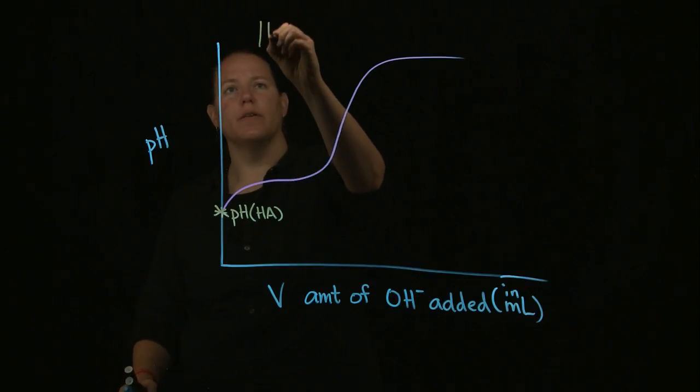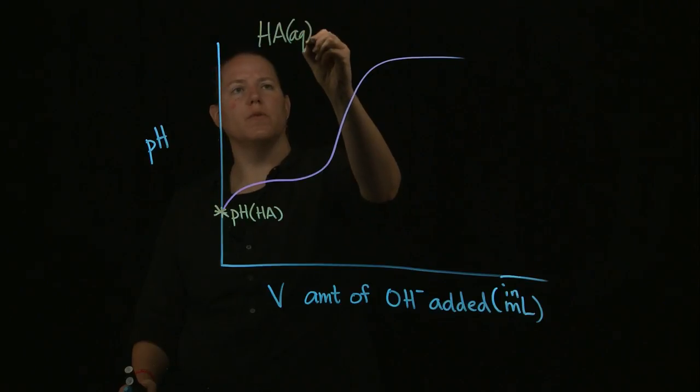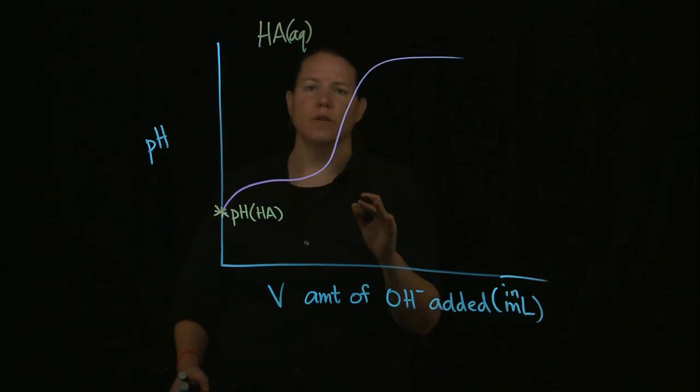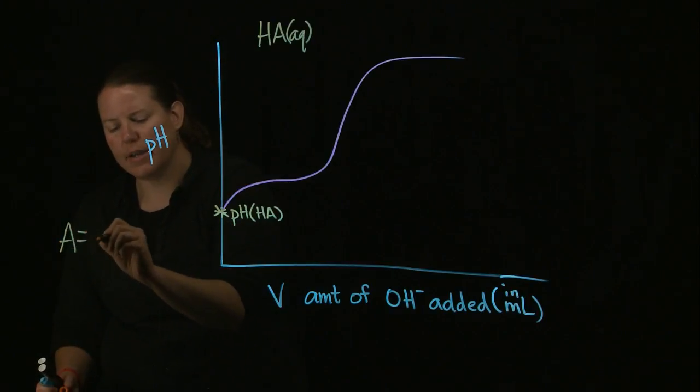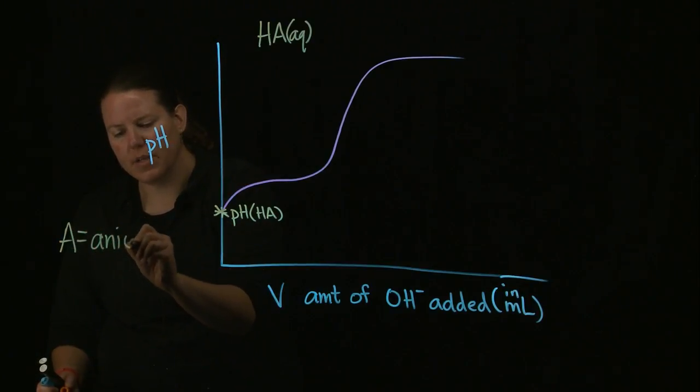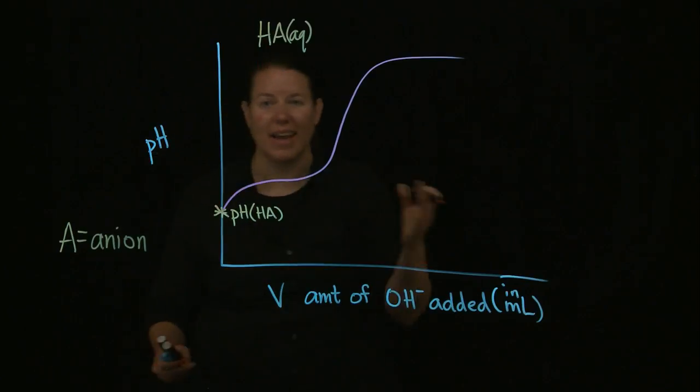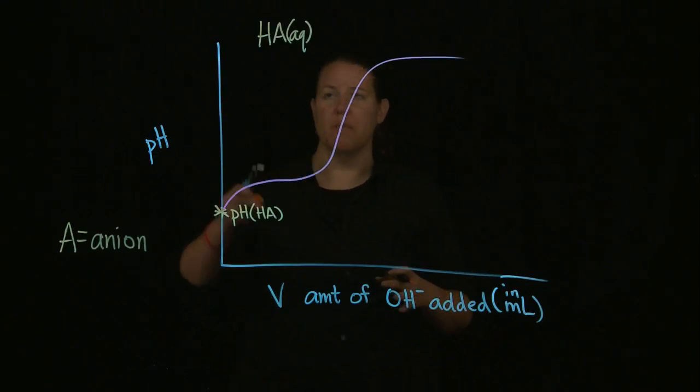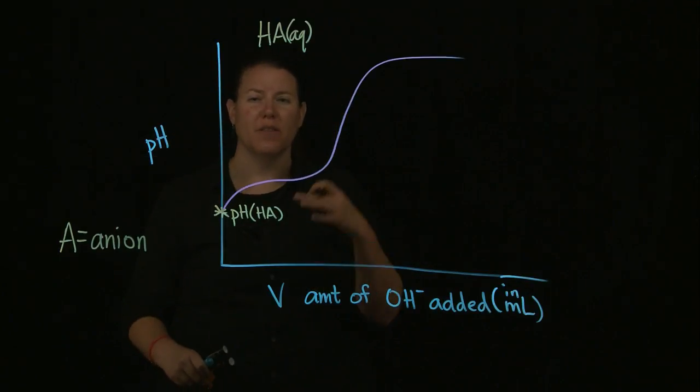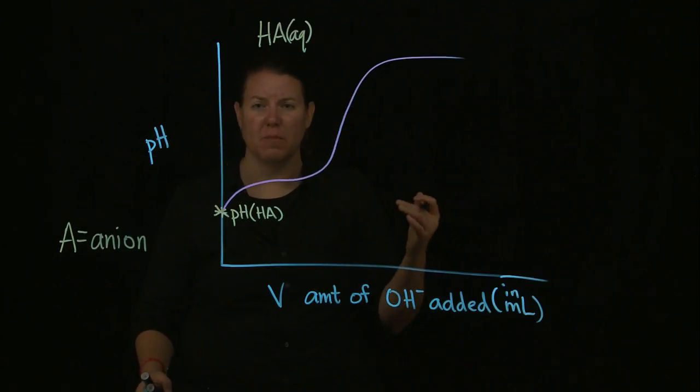So the overall reaction we're looking at here is HA, which is aqueous. A here is a filler. So A, you can have X. I tend to use A because that's a reminder that it is an anion. When I say monoprotic acid, what I mean is that it has one H in front, therefore, the anion is a minus charge of 1.